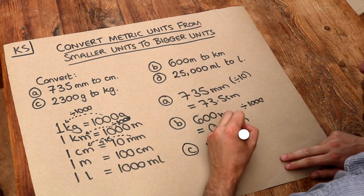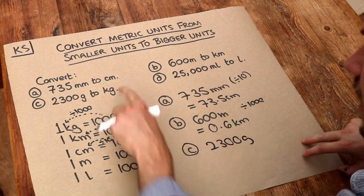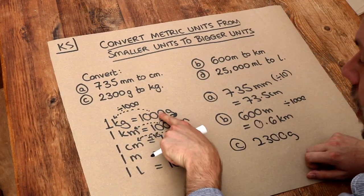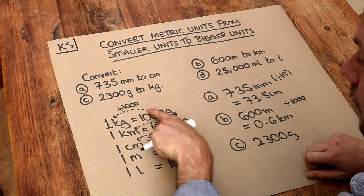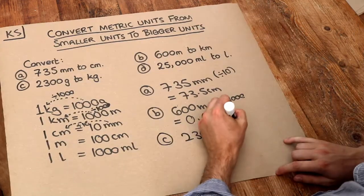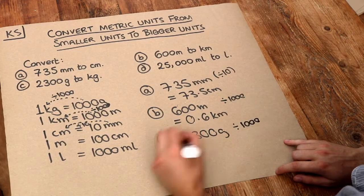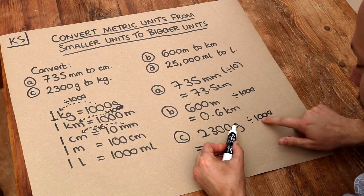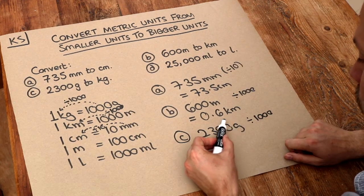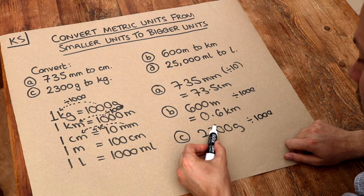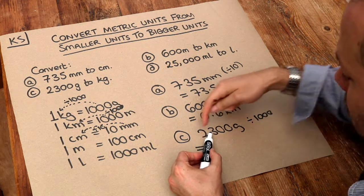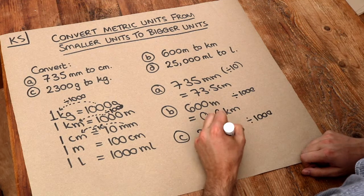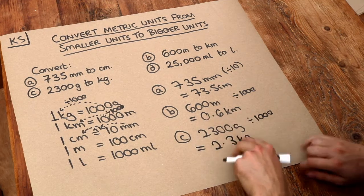Now, 2,300 grams — we want to convert to kilograms. To get from grams to kilograms, the number is getting a thousand times smaller, so we have to divide by a thousand. The decimal point is currently here. Move it three times for the three zeros — one, two, three — and it's now 2.3 kilograms. We don't need the zeros after that three.